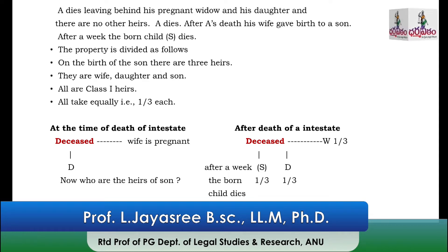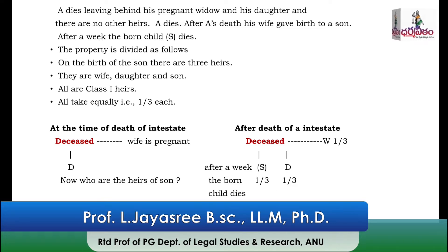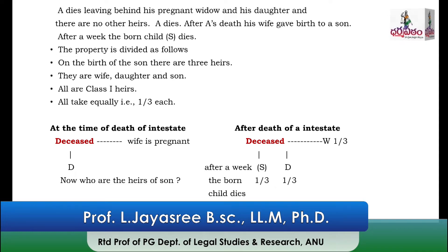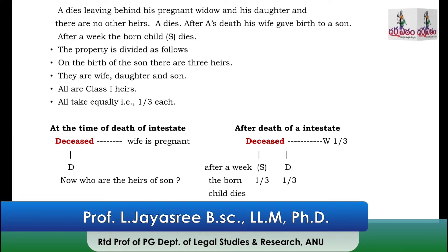So how many heirs are there? Even though the son was born later, the law considers that the son was present at the time of the death of A. So there are three heirs: mother, son, and daughter — all are Class 1 heirs. So the property will be distributed equally; each will get one third of the property.